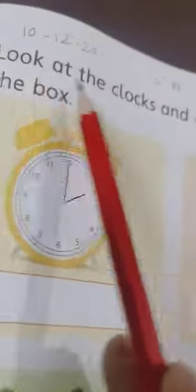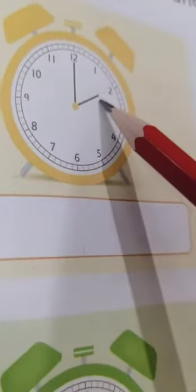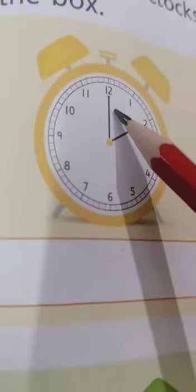Well, now look at the topic. Okay, look at the clocks and write the time in the box. Well, students, as I told you, in the clock, this hand is called hour hand and this hand is called minute hand.